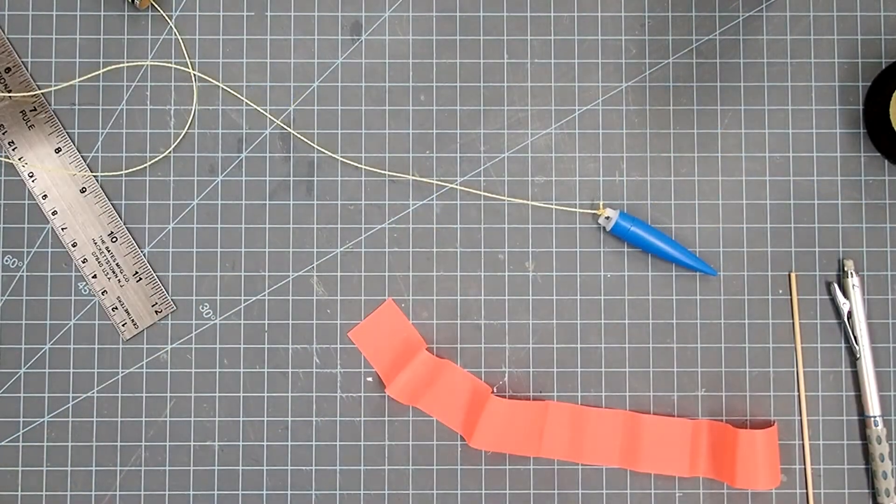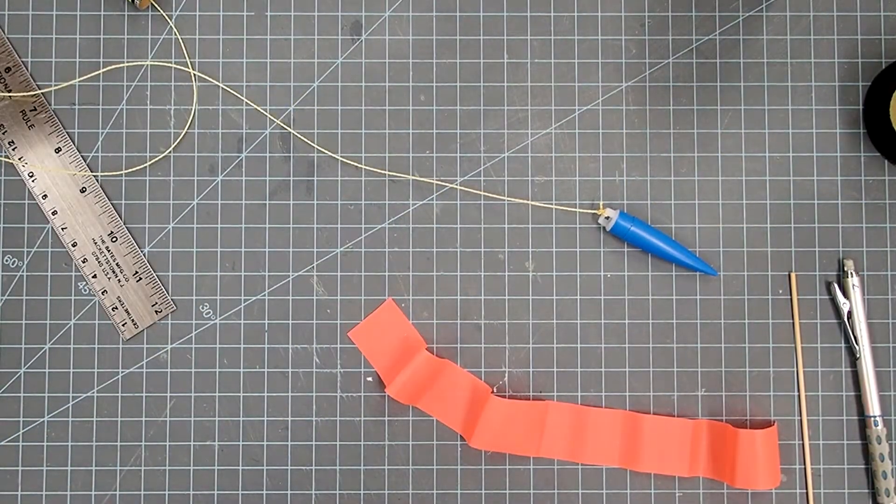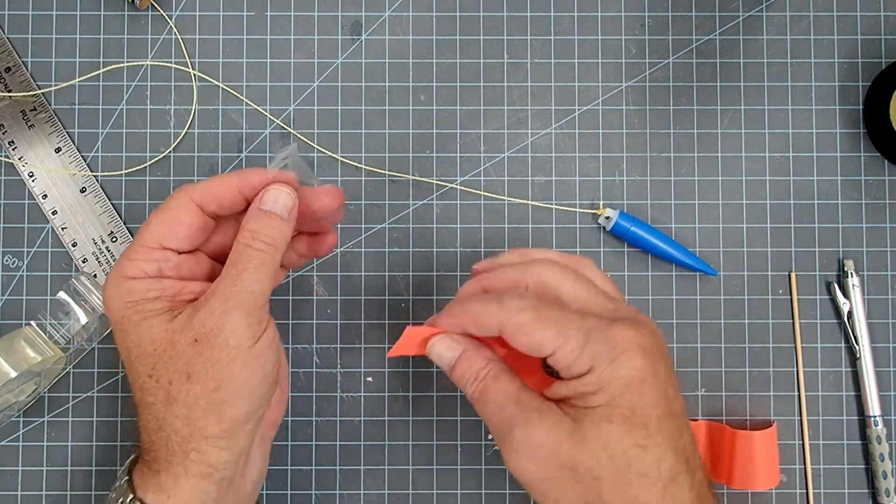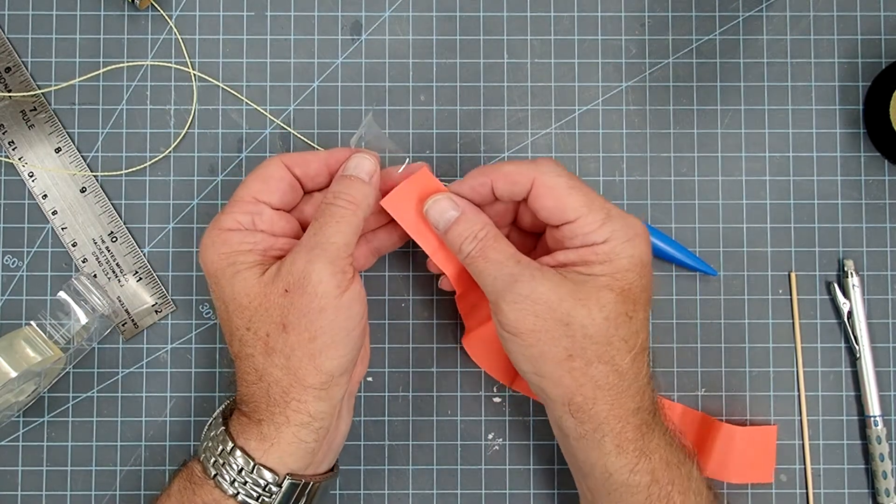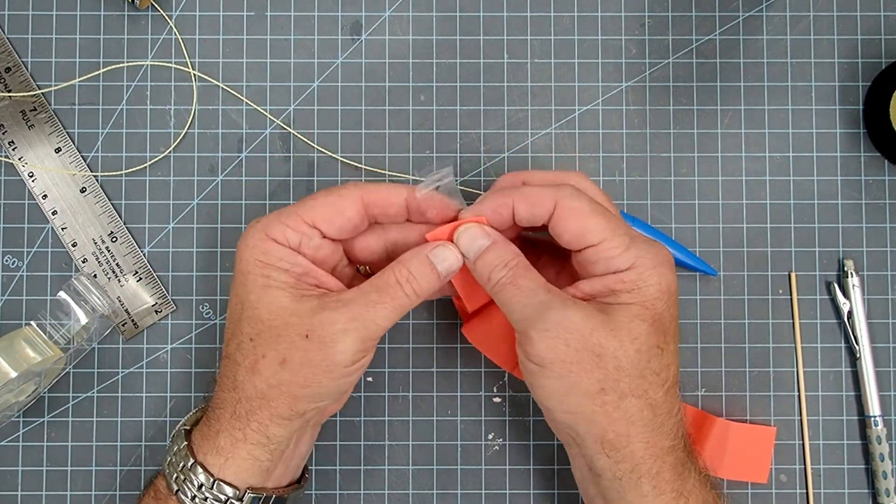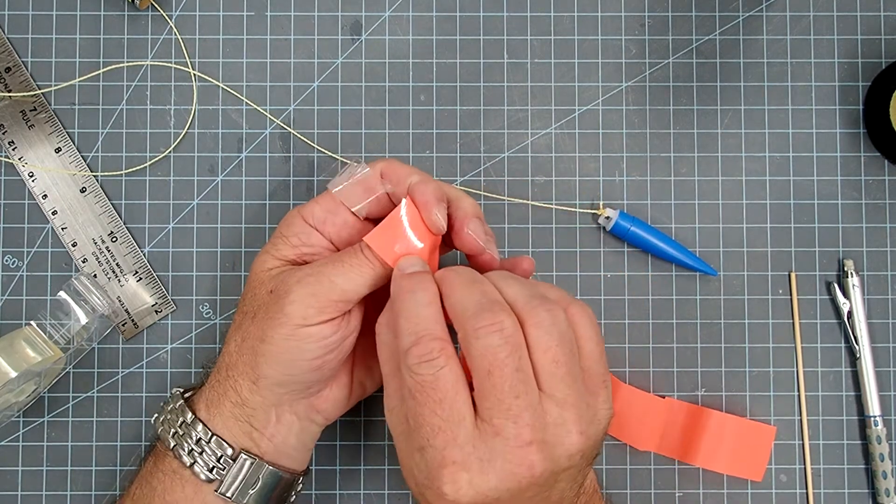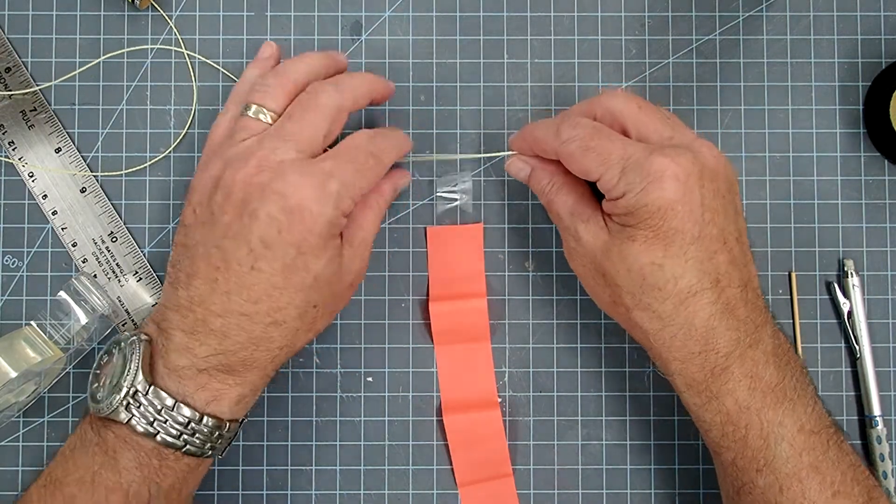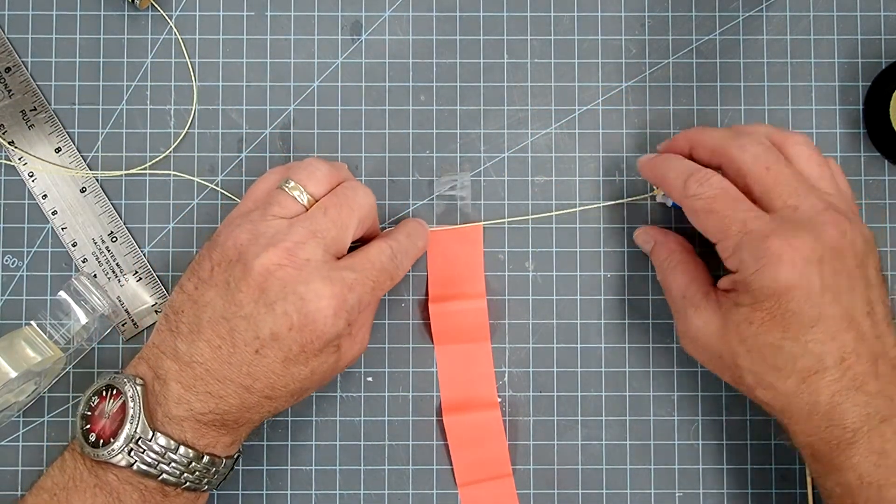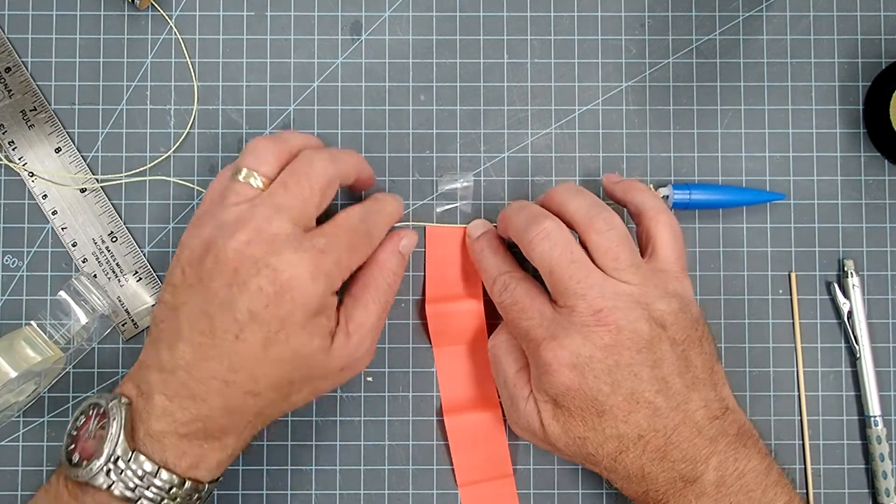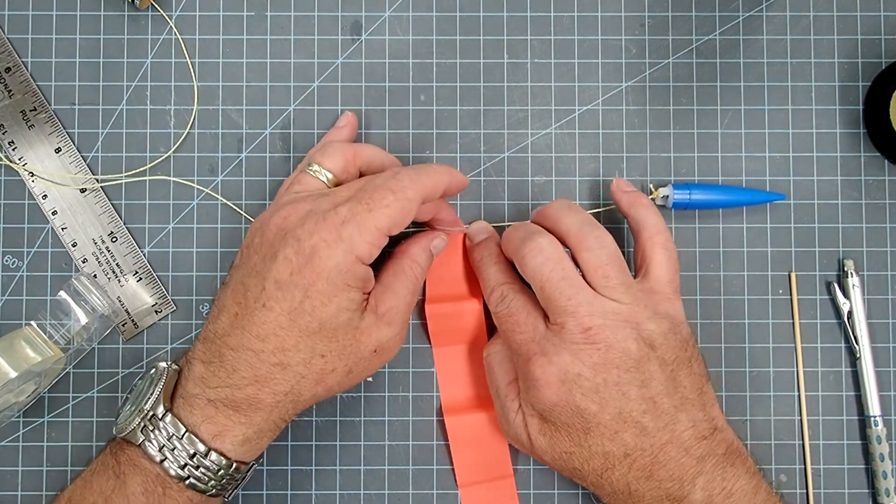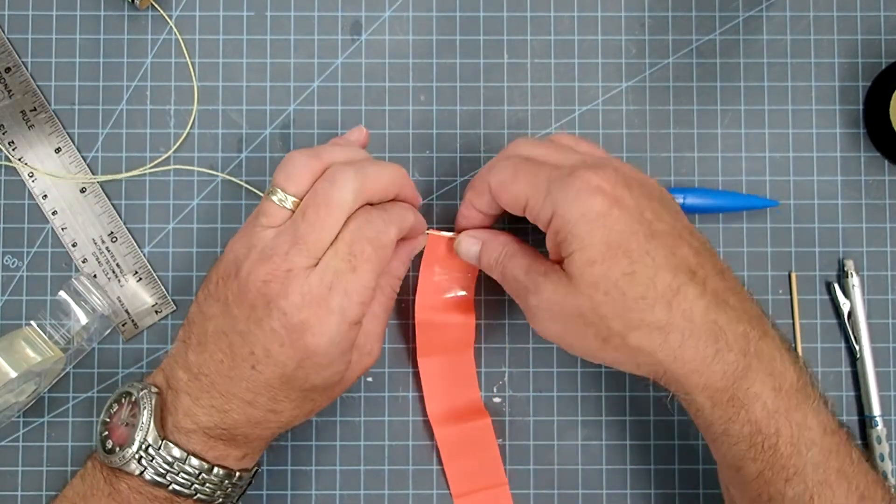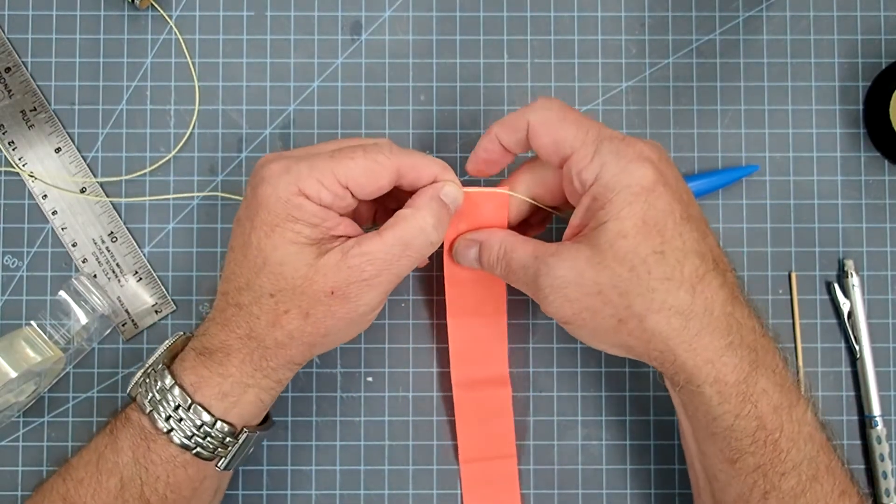And then finally for the streamer, I just need some transparent tape here. So I've got an inch and a half, two inches there. I'm just going to tape this on one side of the streamer there. And I know it's transparent, so it's going to be kind of hard to see. And then I'm going to bring this down. And this is about 10 centimeters or so. Fold that over.